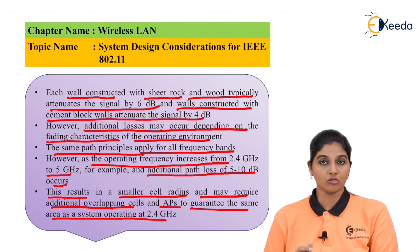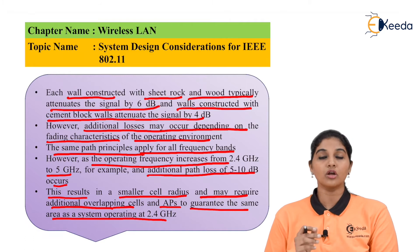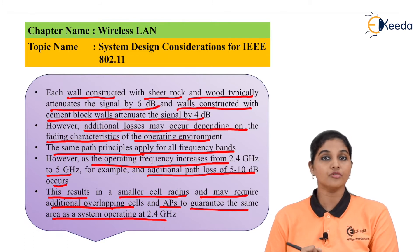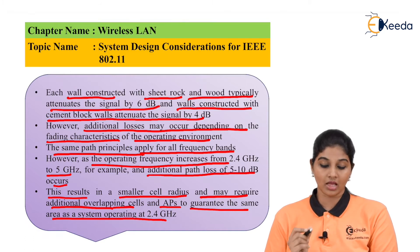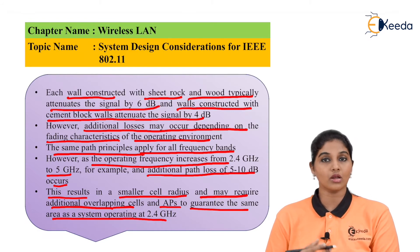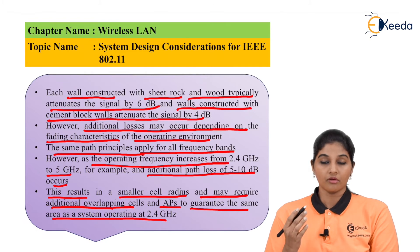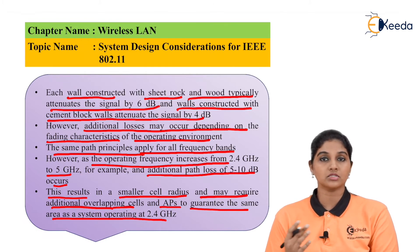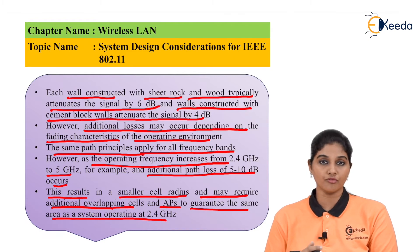In order to have less path loss, the system should operate at 2.4 GHz. At 5 GHz, a smaller cell radius means more overlapping cells and more access points are required to provide the same performance as the 2.4 GHz frequency band.